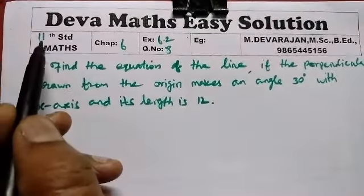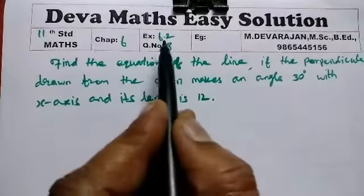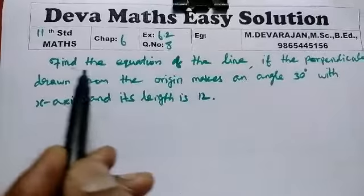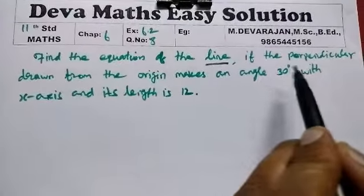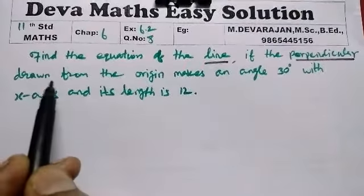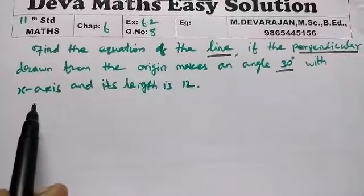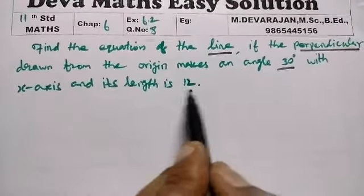Hi students, this is Devo. Now you're going to see Chapter 6, Exercise 6.2, Question Number 8. Find the equation of the line if the perpendicular drawn from the origin makes an angle of 30 degrees with the x-axis and its length is 12.